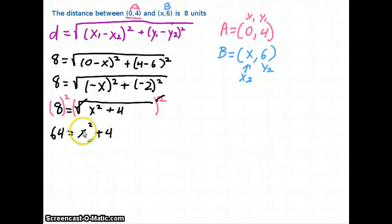Now getting the x² by itself, since I want to solve for x, I'm going to subtract 4 from each side, which is going to leave me with 60 = x². And then to undo this square, I'm going to use the inverse of what a square is to get rid of that square, which is just square rooting it.